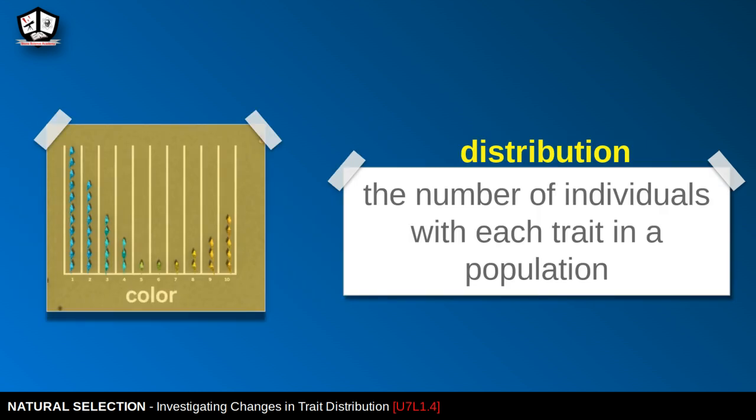Distribution is the number of individuals with each trait in a population. Represented here by color — blue, green, and yellow — you can see how many of each there are in that histogram.